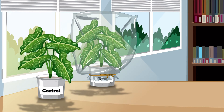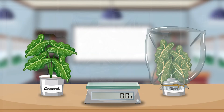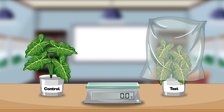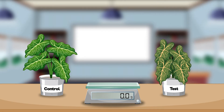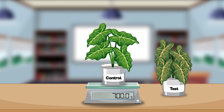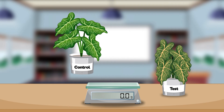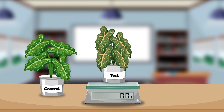Ensure they receive adequate water during the experiment. After a few weeks, remove the plastic bag from the test plant and weigh both plants again, recording their final weights. Compare the weight changes of both plants. The control plant should have gained more weight than the test plant, as it had access to more carbon dioxide and could undergo more photosynthesis.